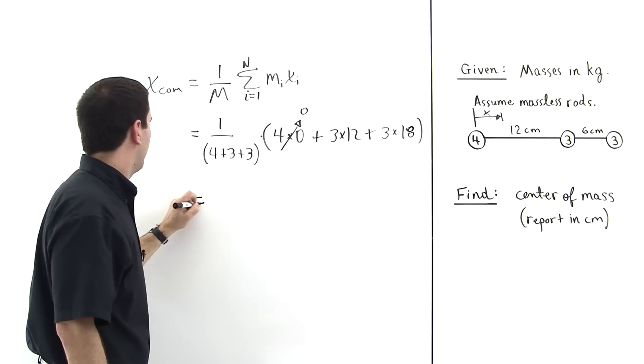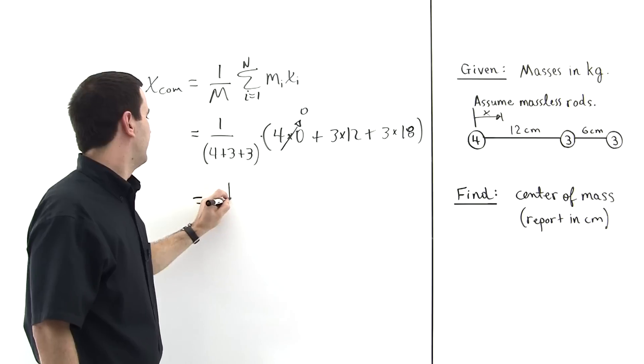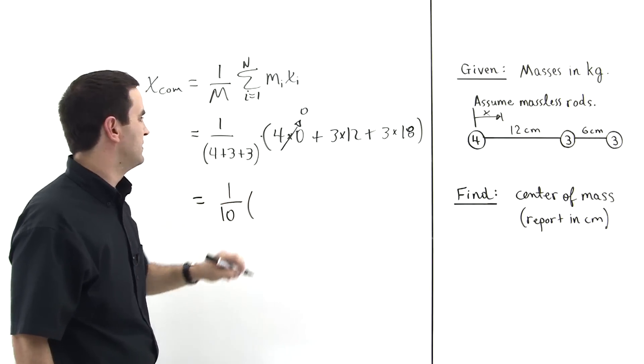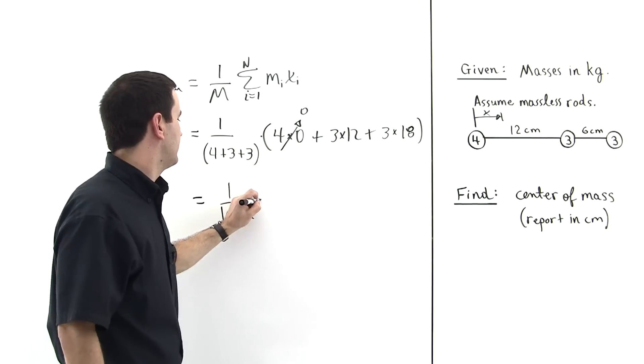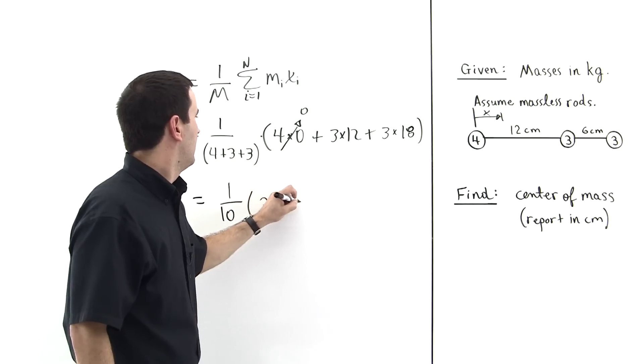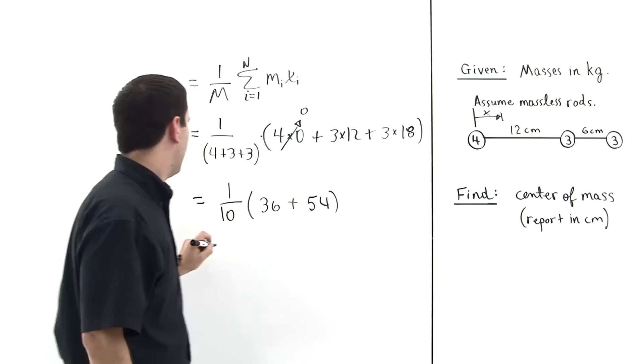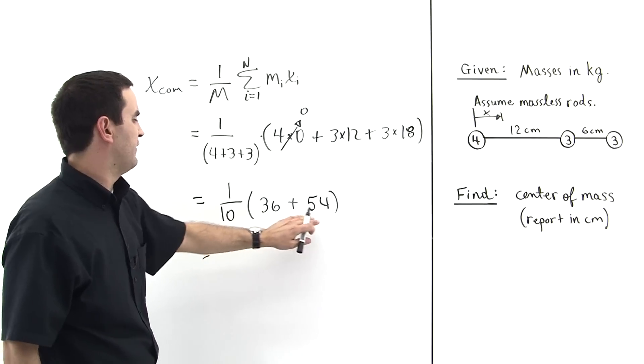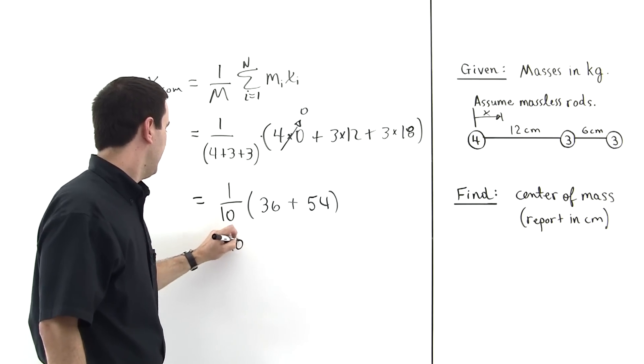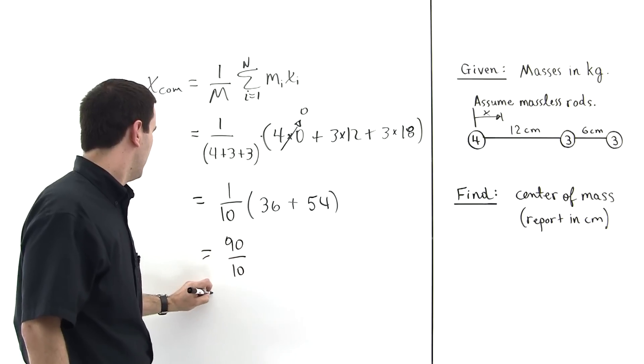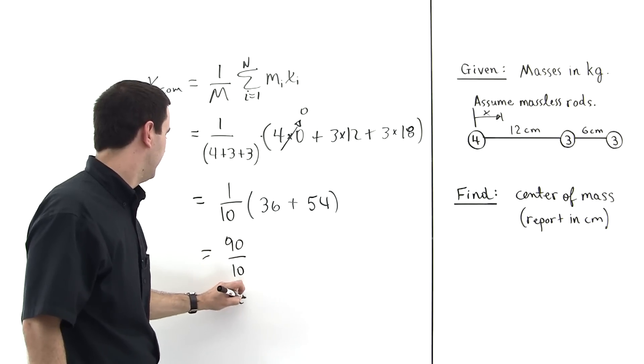So then four plus three plus three, that's ten. So this is one over ten times thirty-six, three times twelve, plus three times eighteen is fifty-four. And this is equal to thirty-six plus fifty-four is equal to ninety. And we have ninety over ten, which is of course equal to nine centimeters.